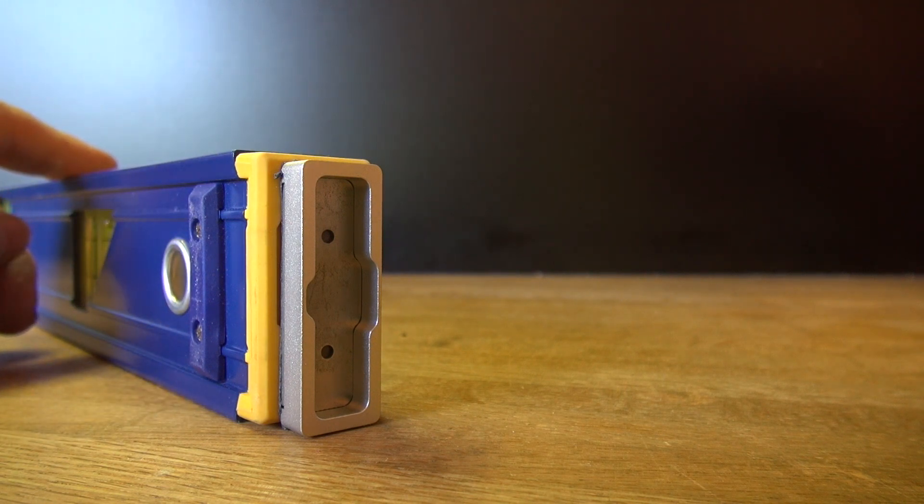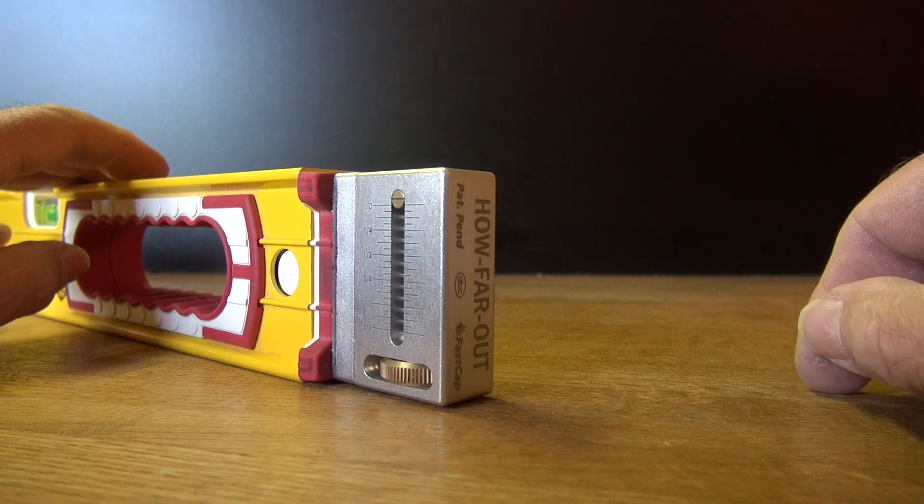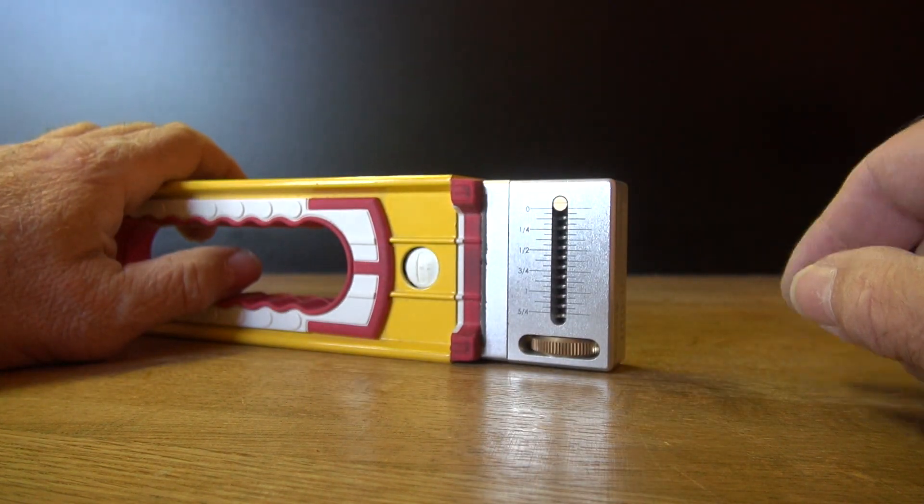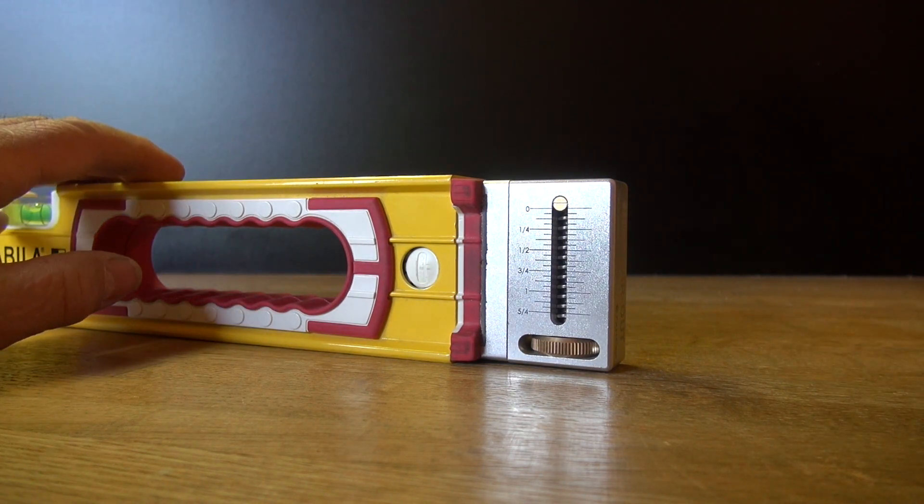Let me show you an alternate mount that I like to use on my Stabila 196 and 96. That's the first level I designed this for. Now here you can see that on a Stabila, you can make the basic mount just like I did a moment ago. This is great if you've got a mix of levels and level brands.